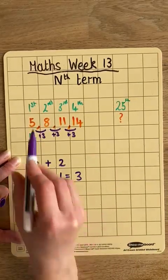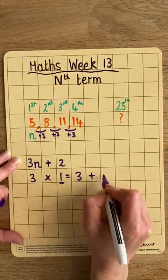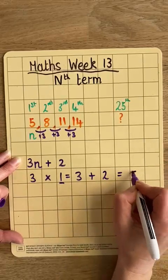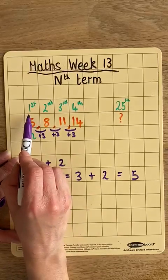3 times 1, the first term, is 3, add 2, is 5. So that works for our first term. This formula works for our first term.